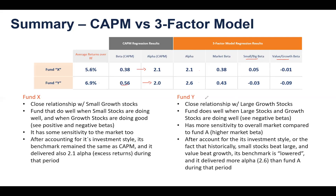Looking at Fund X's three-factor results: its beta to the market didn't change much, and those two additional coefficients are very small, but still positive. So when small stocks are outperforming large stocks, this fund is doing well. However, when value stocks are outperforming growth stocks, this fund is doing poorly. This indicates a close relationship with small and growth stocks, and the alpha is 2.1 using this three-factor model.